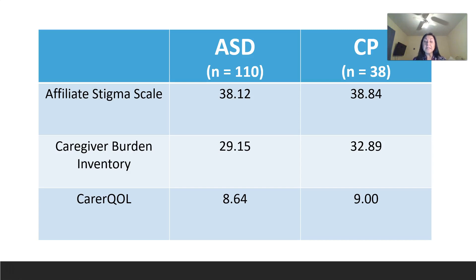These are the total mean scores for the results of the surveys. Ordinary least square regression was used to evaluate the effects of affiliate stigma on caregiver stress and caregiver quality of life, while controlling for key demographic factors such as gender, age, education level, employment, and number of children.